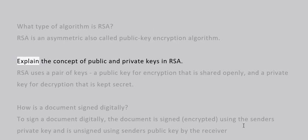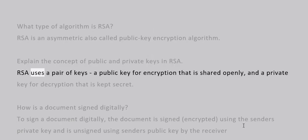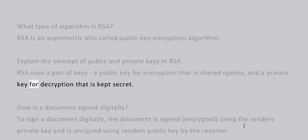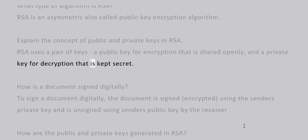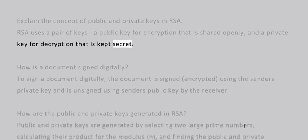Explain the concept of public and private keys in RSA. RSA uses a pair of keys: a public key for encryption that is shared openly, and a private key for decryption that is kept secret.